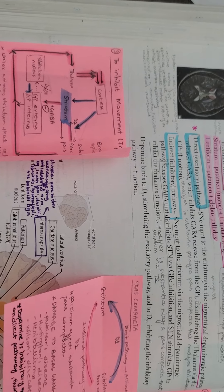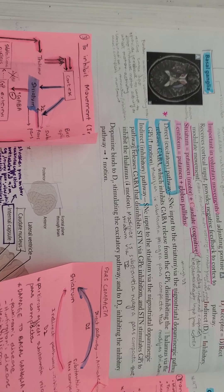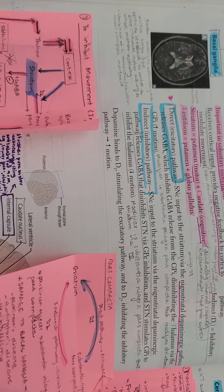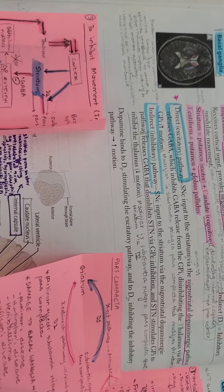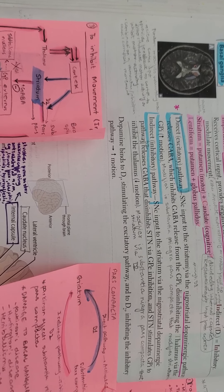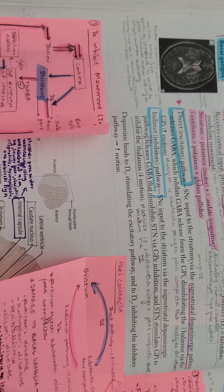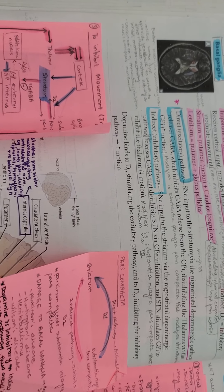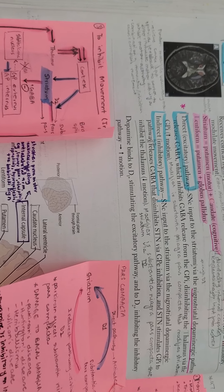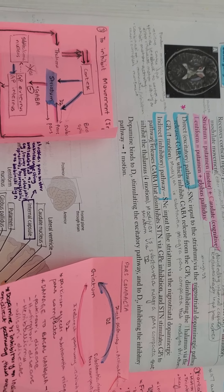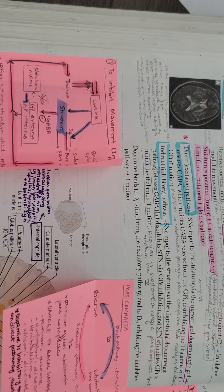The basal ganglia is important in voluntary movement, adjusting involuntary movement, and adjusting posture. Basically, the basal ganglia receives cortical input and provides negative feedback to the cortex to modulate movement. Whenever the cortex wants to carry out a movement, it makes sure the thalamus is active and stimulated, which helps make that movement possible.